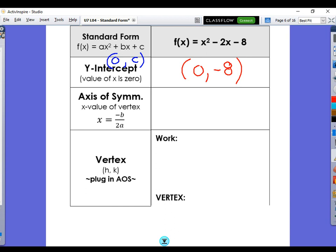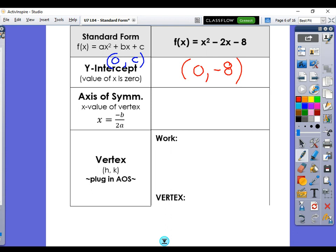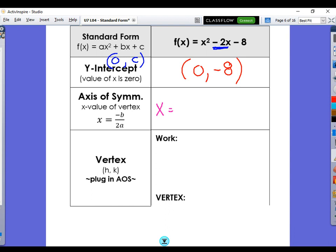Now, let's get into the more important component, the axis of symmetry and the vertex. Remember, we start by finding the axis of symmetry. So let's write that down. x equals opposite of b. Well, what is my b value? My b value is negative 2. So if that's negative 2, the opposite of that is positive 2.